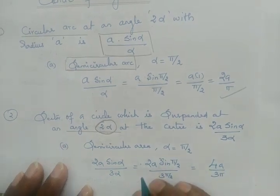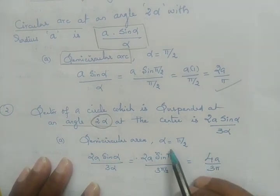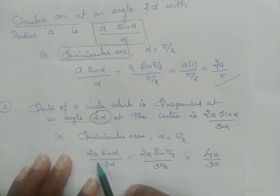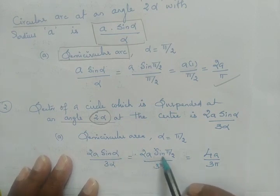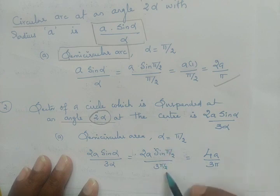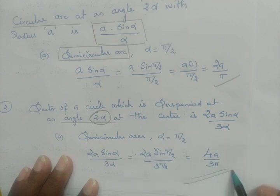For a semicircular area, you replace alpha by π/2. So 2a·sinα/3α becomes 2a·sin(π/2) / (3·π/2). Sin(π/2) equals 1, and simplifying you get 4a/3π. So for the semicircular area, the center of gravity is 4a/3π.